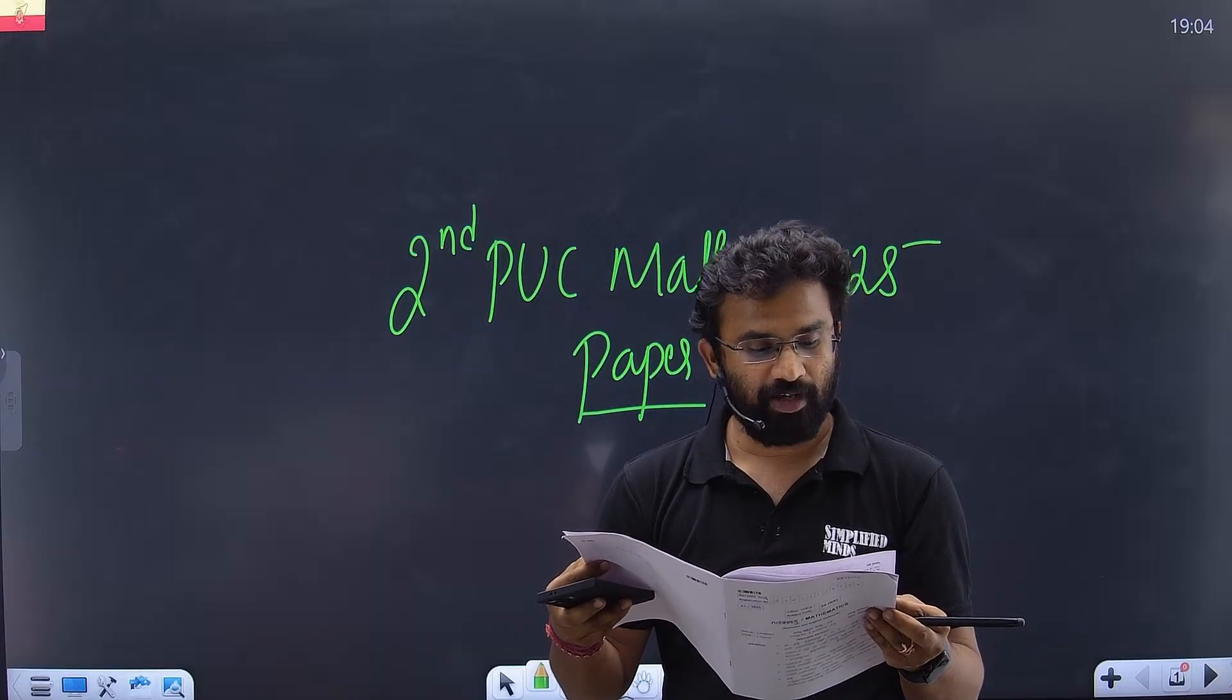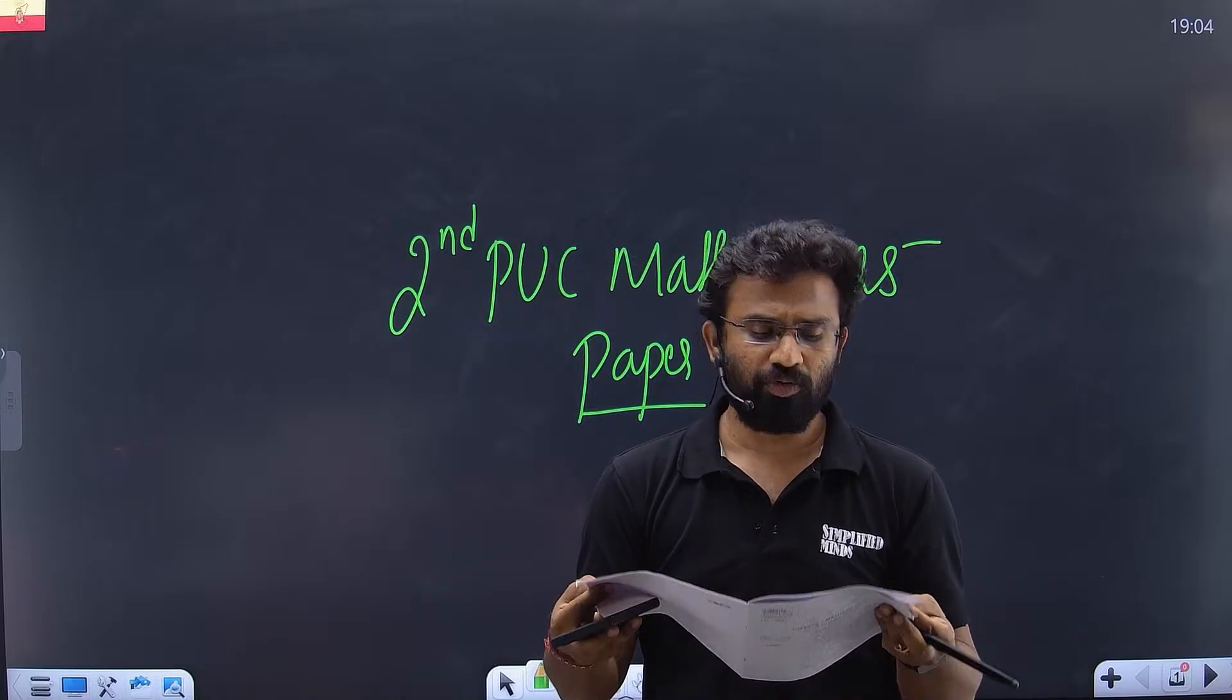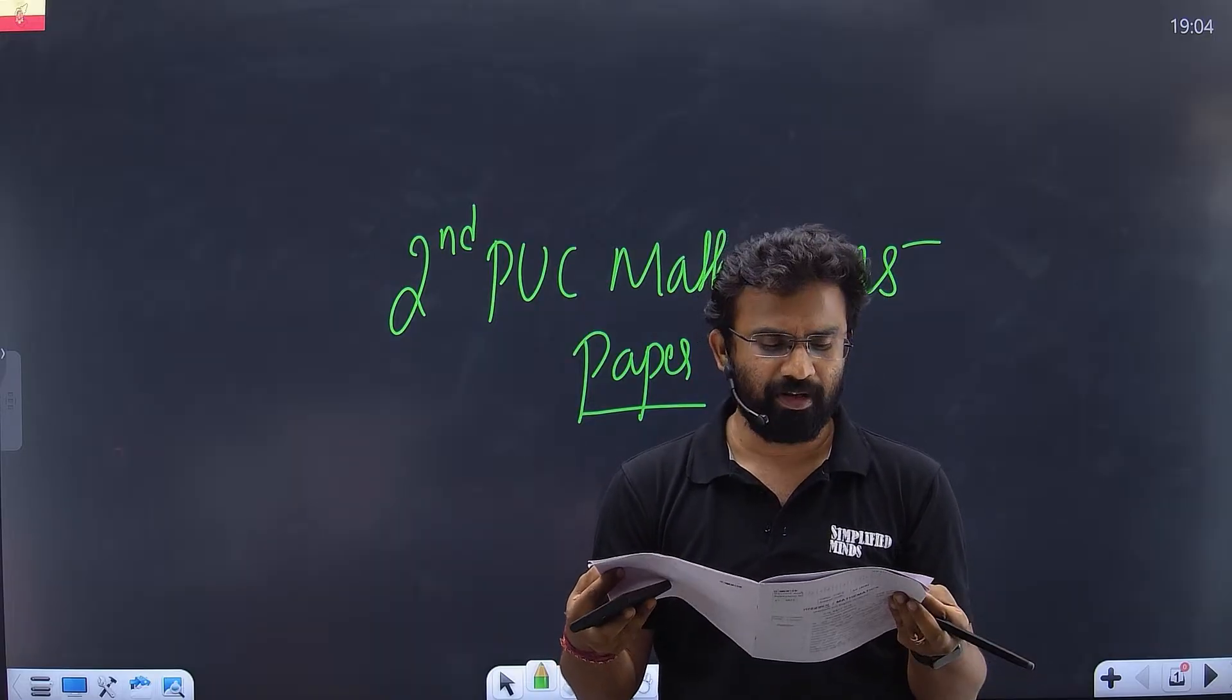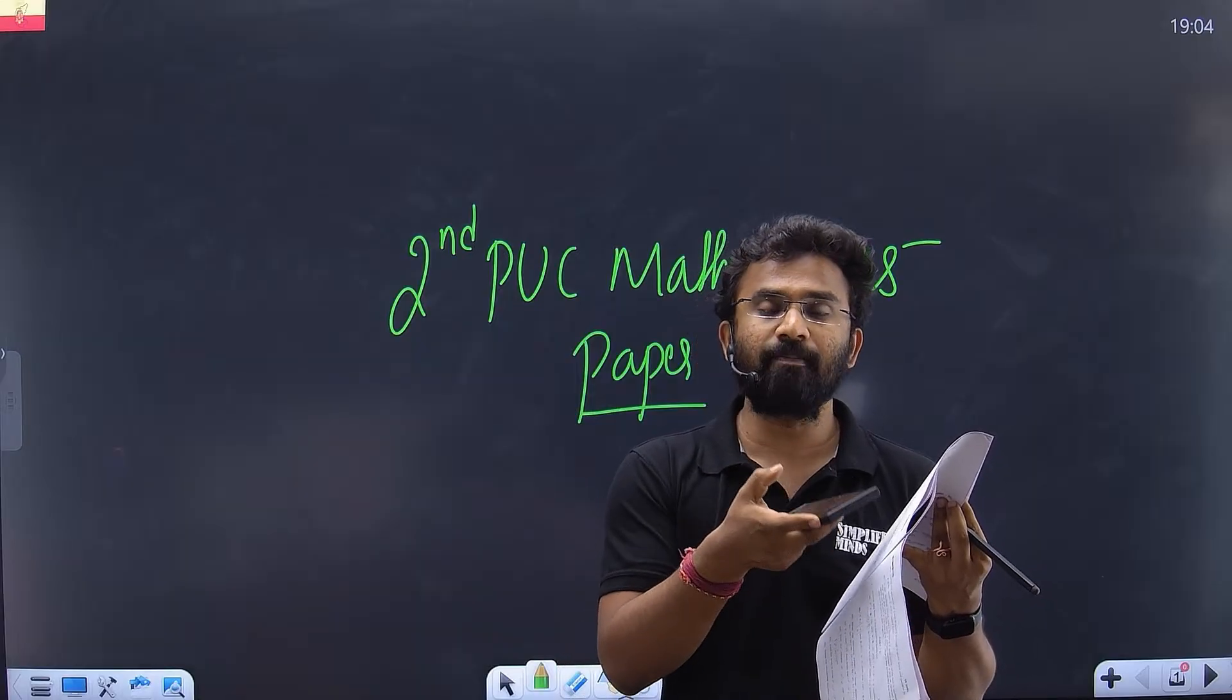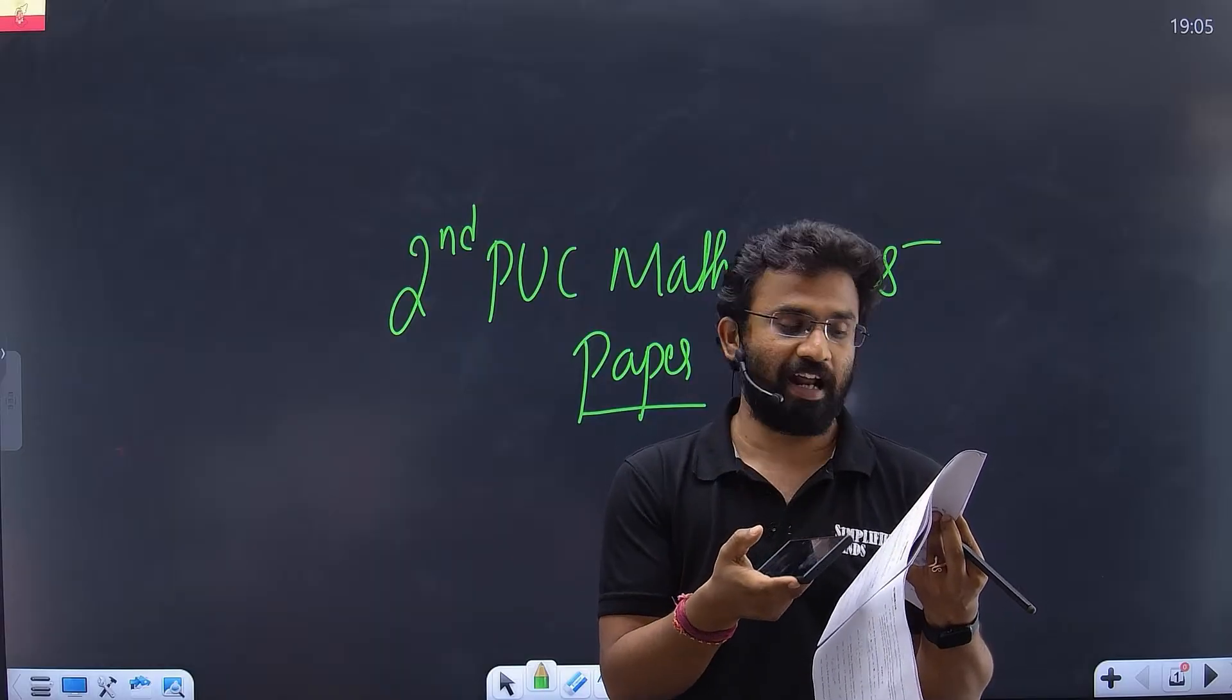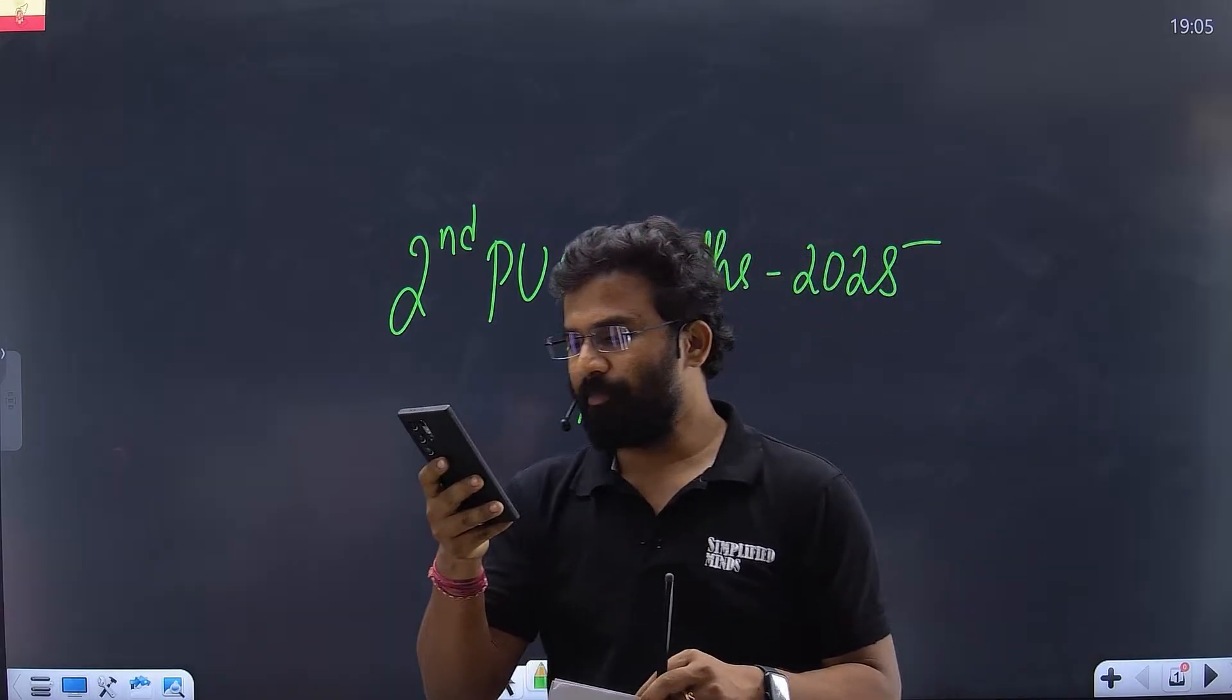Question 27: They gave three vectors asking for the unit vector parallel to that. You just find 2A minus B plus 3C, then find the unit vector. Simple. Finding if lines are perpendicular - same question from the one-shot lecture. Probability also same.